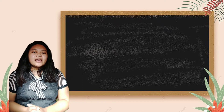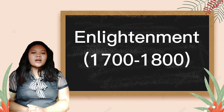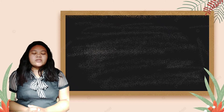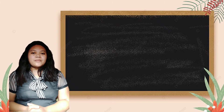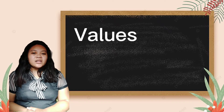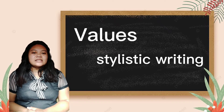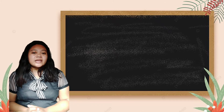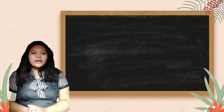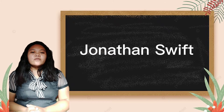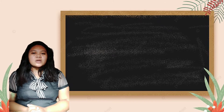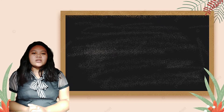In the Enlightenment period, literary criticism became more popular. Criticism was influenced by values of stylistic writing, including clear, bold, and precise writing. Many works of Jonathan Swift, for instance, were criticized, including his book Gulliver's Travels.